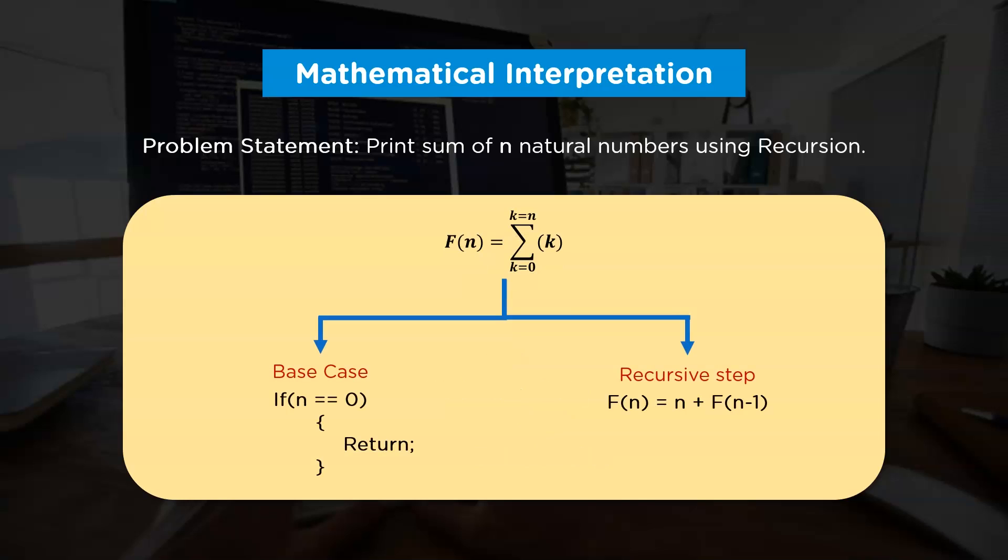Whereas the base case is a condition which is stopping the recursion when k is reaching value 0. In terms of programming, it can be represented using if block. Now I hope you guys have understood how we can break a larger problem into smaller sub problems.